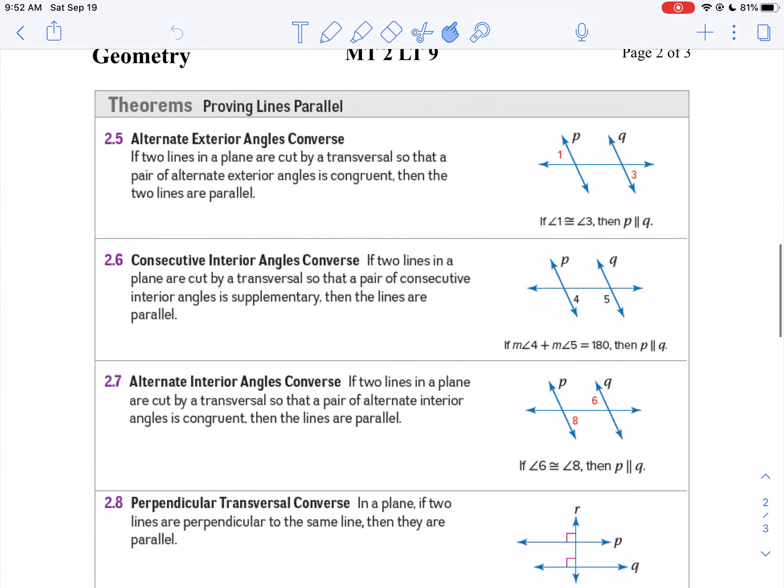Once we have corresponding angles congruent, then just like previously, if the alternate exterior angles are congruent, the lines must be parallel. If the same side interior angles or consecutive interior angles are supplementary, the lines must be parallel. If the alternate interior angles are congruent, the lines must be parallel.